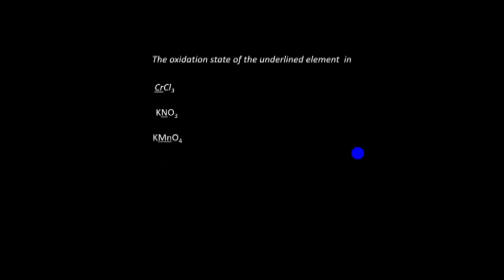For potassium nitrate, KNO₃, nitrogen is the unknown variable; potassium is plus one and oxygen is minus two — nitrogen comes out to plus five. For potassium permanganate, KMnO₄, manganese is plus seven. For potassium chlorate, KClO₃, chlorine is plus five. For sodium thiosulfate, Na₂S₂O₃, sulfur is plus two.